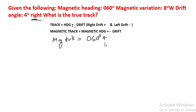plus because this is right, plus 4. Magnetic track is equal to 064 degrees. Now we have got the magnetic track.